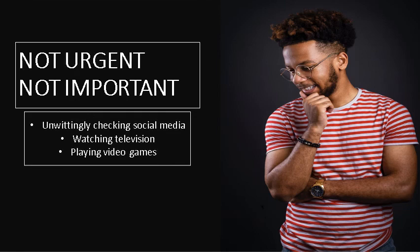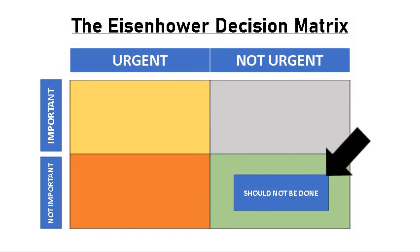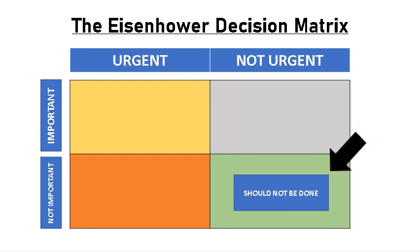Not urgent and not important tasks are those you should not do because they are just a waste of time. They simply eat out of your precious study time without adding any value to your intellectual development. Some examples include unwittingly checking through Facebook, Twitter, Instagram, and others, and endless hours of watching television and playing video games. Even though the fourth quadrant may seem unnecessary as you try to prioritize your activities during your study session, it can be set aside to include all your distractions — used effectively, especially when you take breaks from studying.